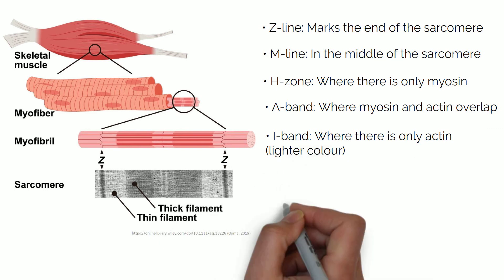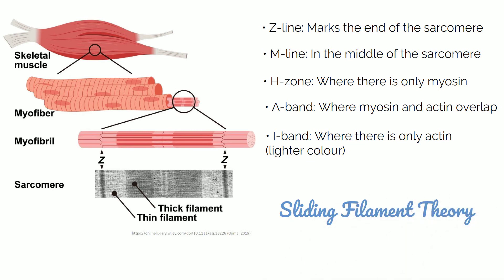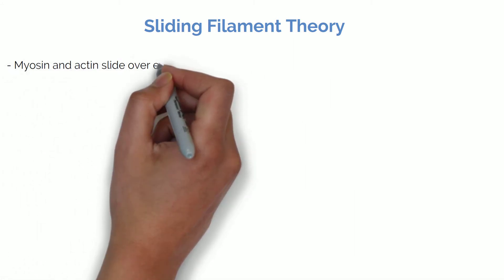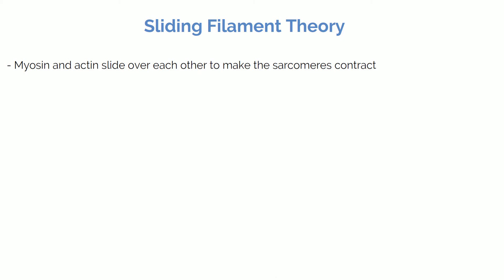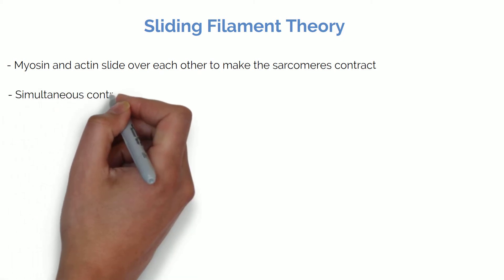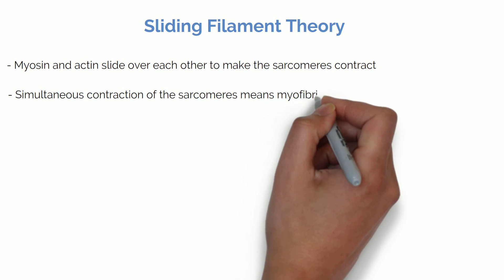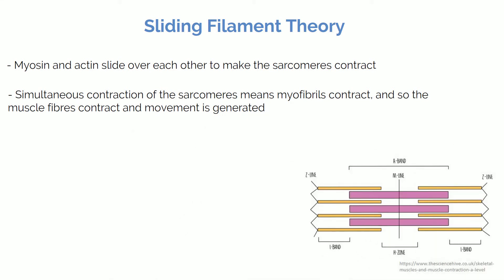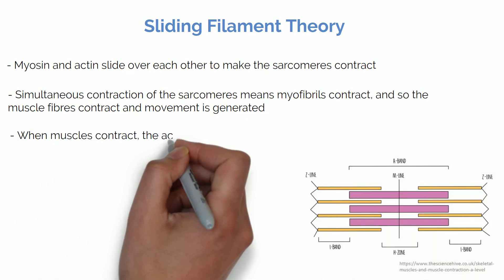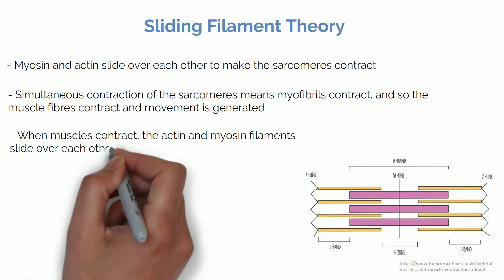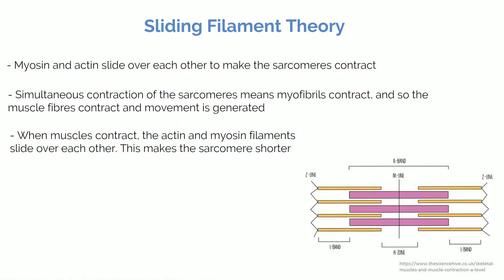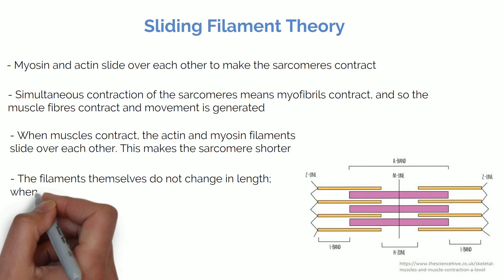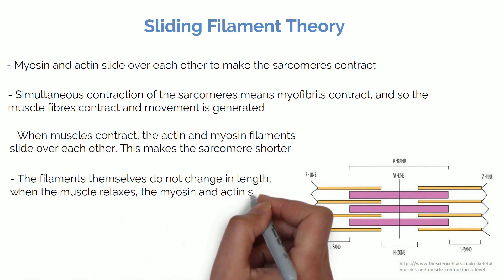The movement of actin and myosin is described by the sliding filament theory. Myosin and actin slide over each other to make the sarcomeres contract. The simultaneous contraction of the sarcomeres means the myofibrils contract, and so the muscle fibres contract and movement is generated. When muscles contract, the actin and myosin filaments slide over each other, making the sarcomere shorter. The filaments themselves do not change in length. When the muscle relaxes, the myosin and actin slide apart and the sarcomere gets longer.